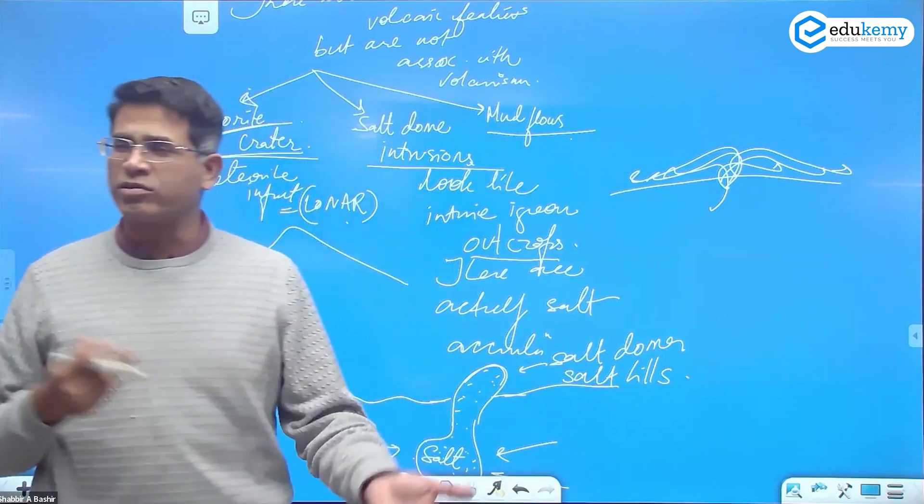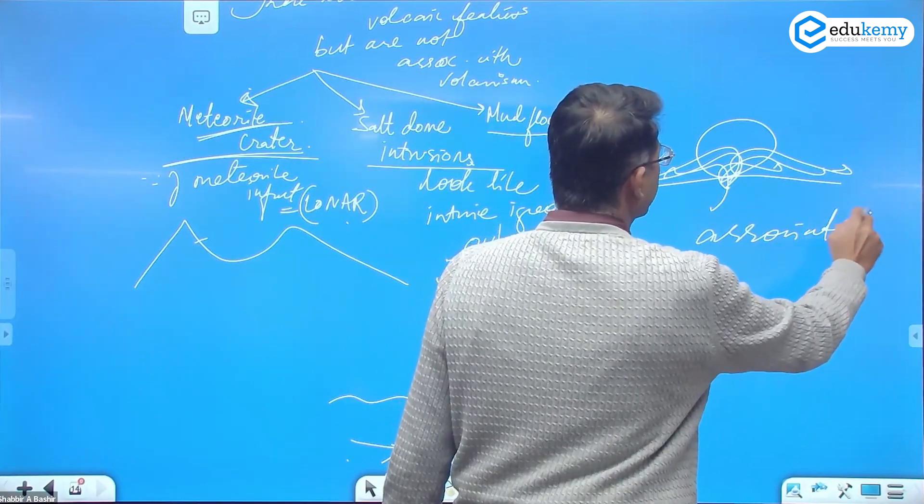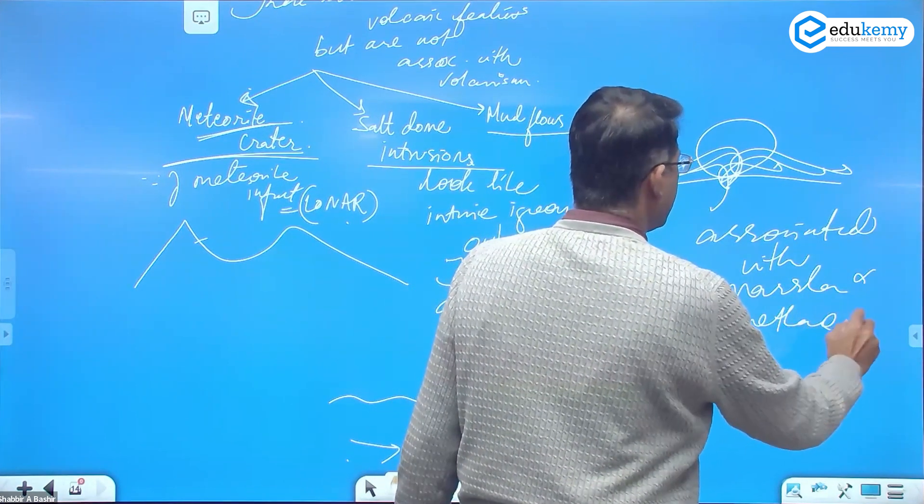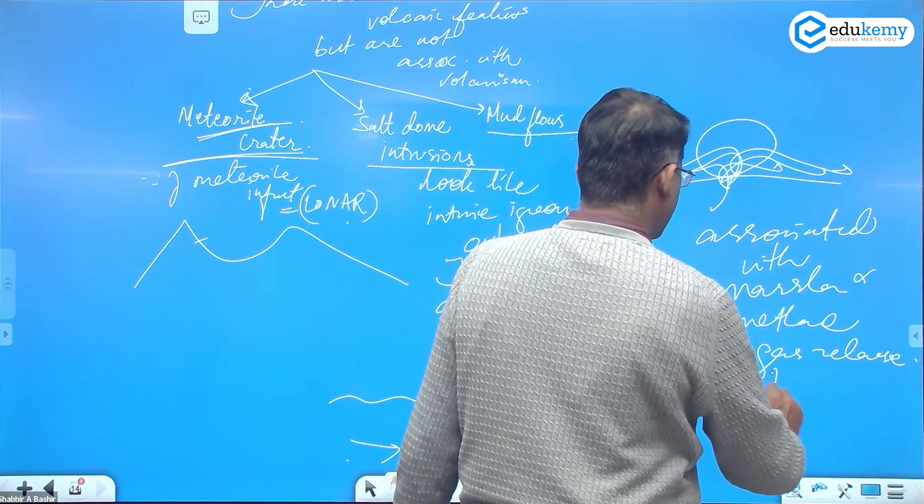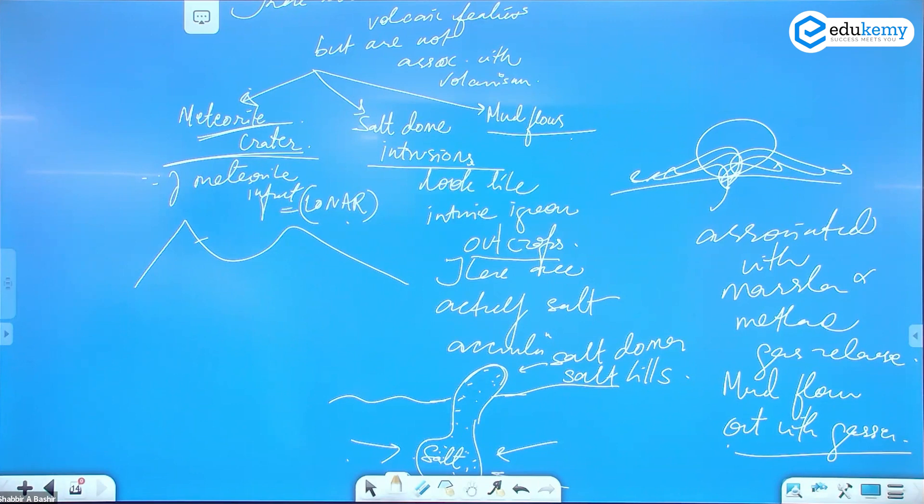It's ground here, from underground mud is coming out like this. Mud is flowing out. So it looks like lava is coming out, but this is mud flow. This is associated with marshes, marshes and methane gas release.